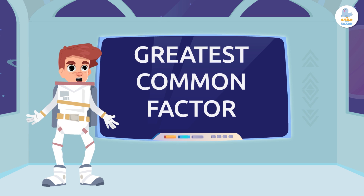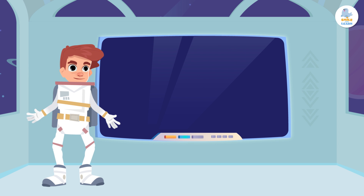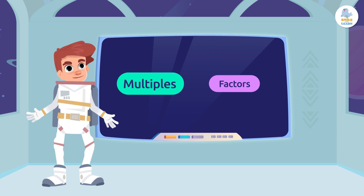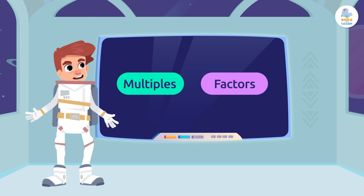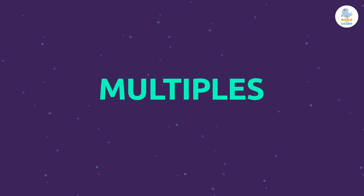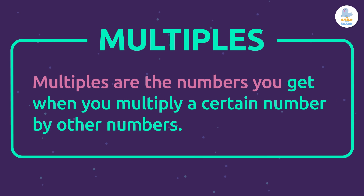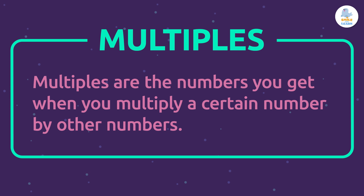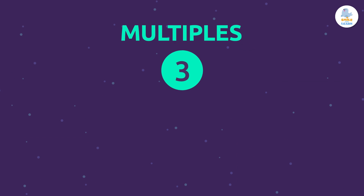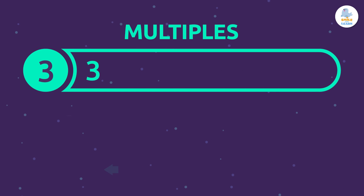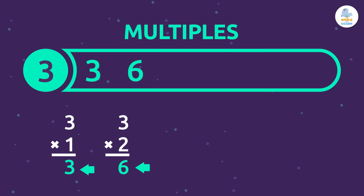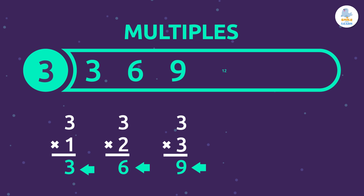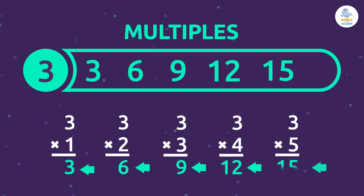To understand this math concept, first we need to review what multiples and factors are. Multiples are the numbers you get when you multiply a certain number by other numbers. For example, the multiples of 3 are 3 (3 times 1), 6 (3 times 2), 9 (3 times 3), and so on.